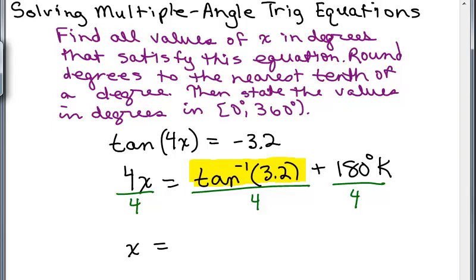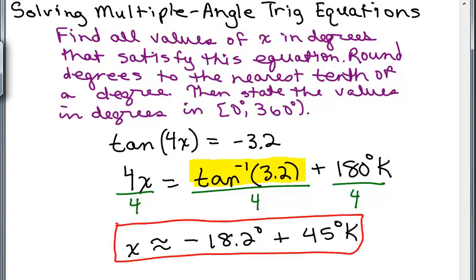And then we're going to round that to the nearest tenth of a degree. So I have, when I plug that in, negative 18.2 degrees, and this isn't exactly equal because I'm rounding to the nearest tenth, plus, and what's 180 degrees divided by 4? That's 45 degrees K. So keep in mind this first angle, negative 18.2 degrees, is not in between 0 and 360. But this is a perfectly okay answer. This will give you all the possible answers where K's an integer.